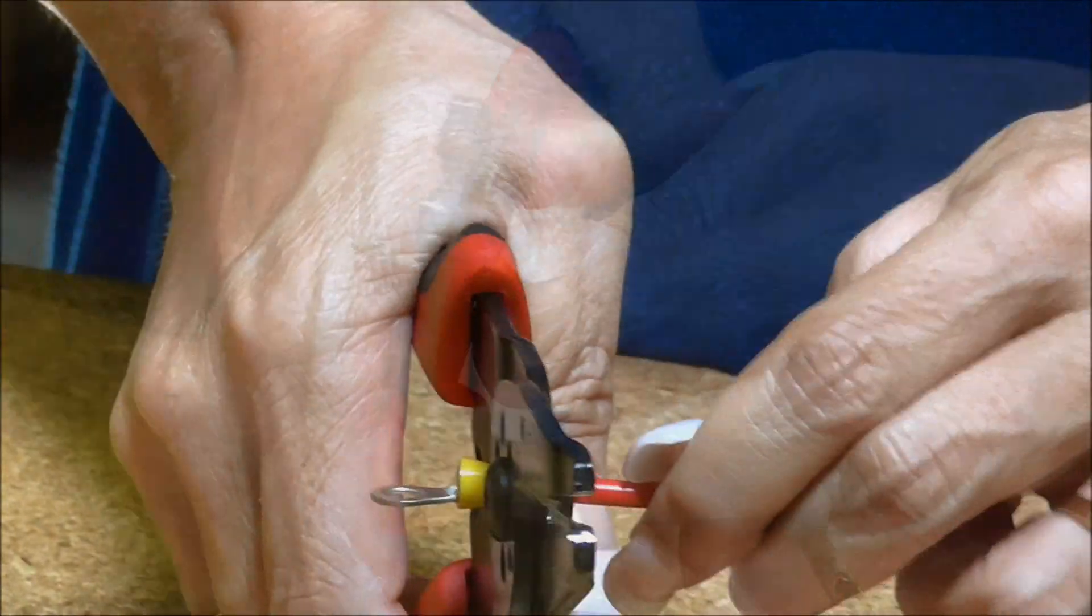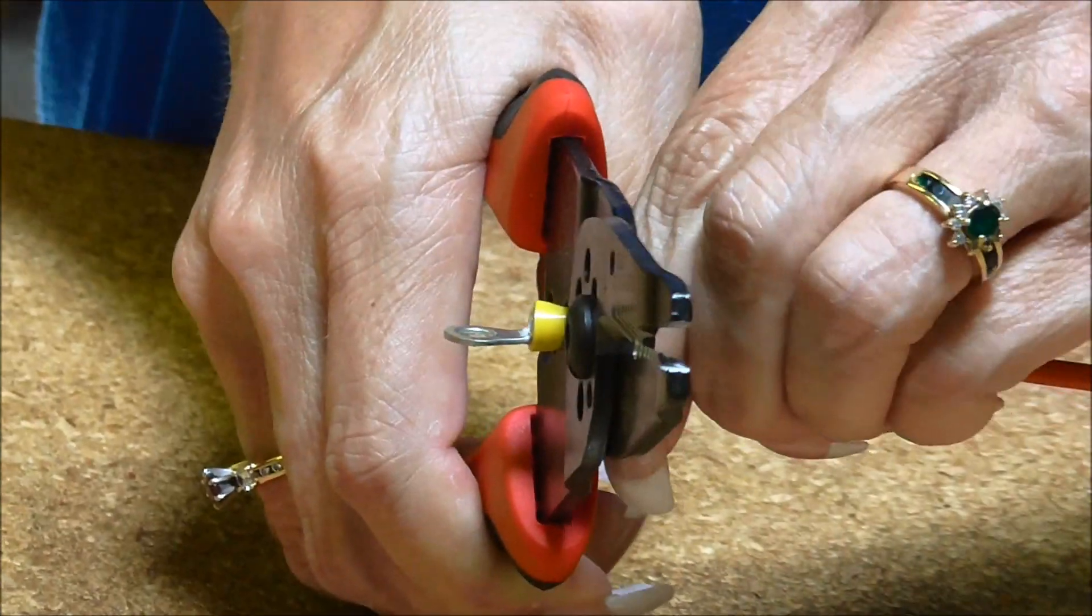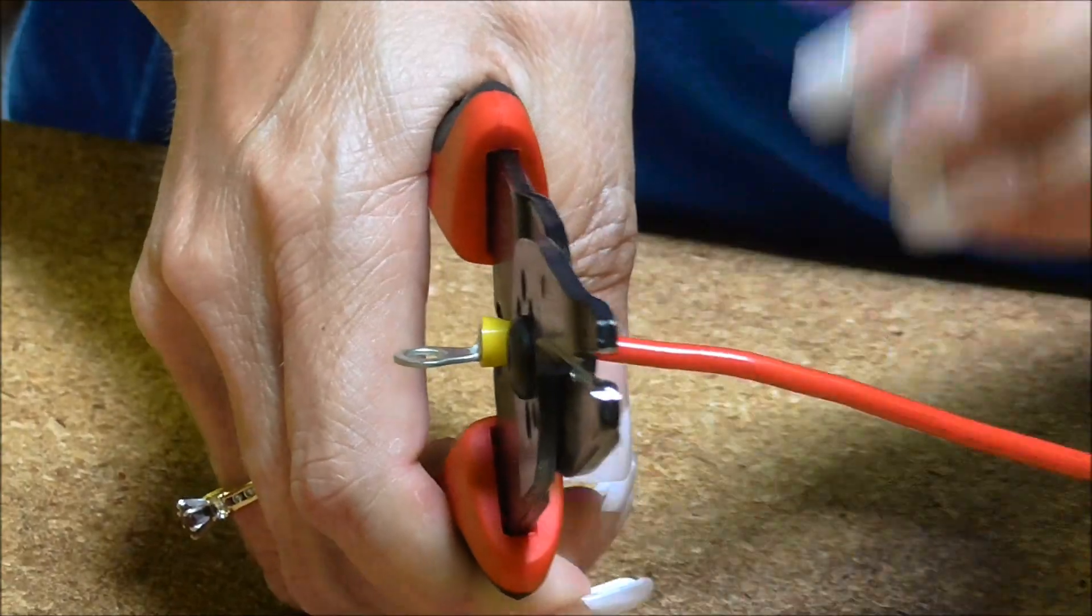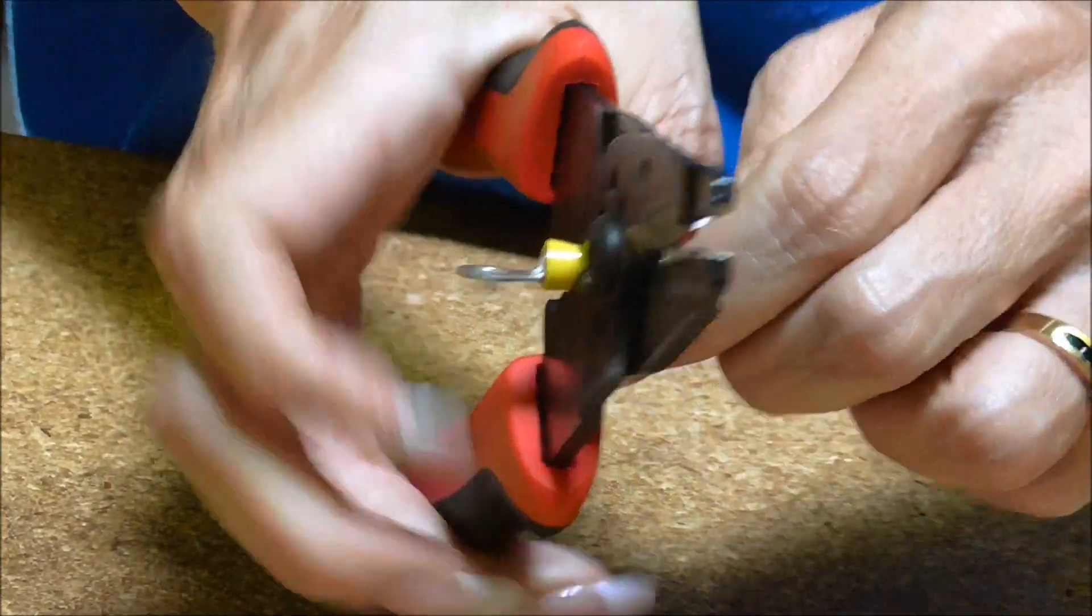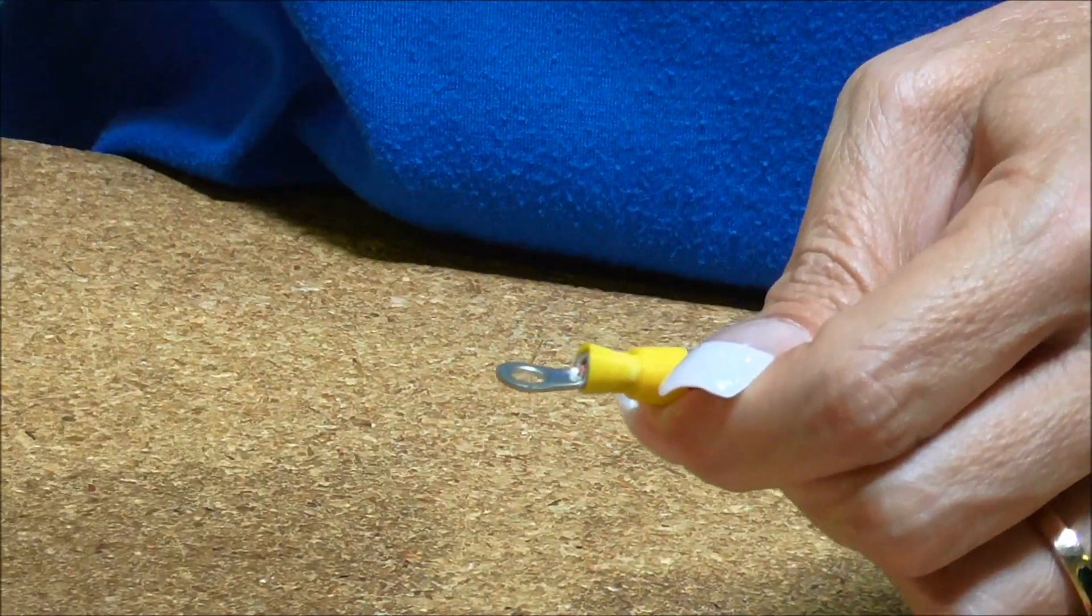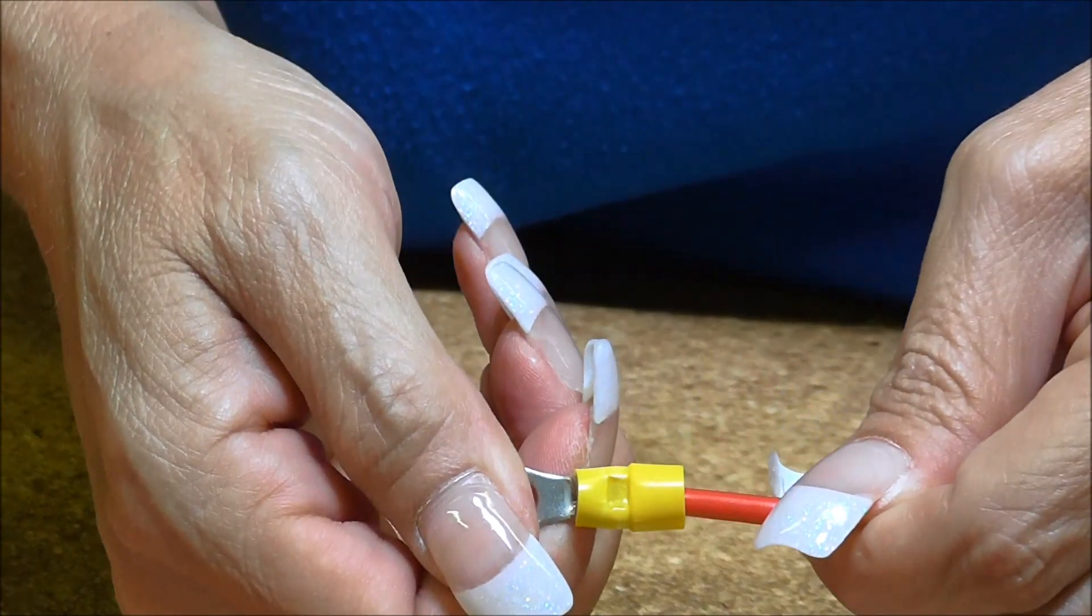Crimp it. You want to crimp it right in the neck of the terminal. You can see the dimple.